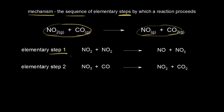In the first step, step one, we have NO2 plus NO2 giving us NO plus NO3. And then in the second elementary step, the NO3 that we just made — NO3 plus CO — gives us NO2 plus CO2.